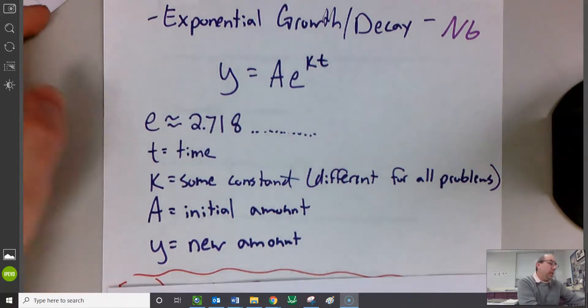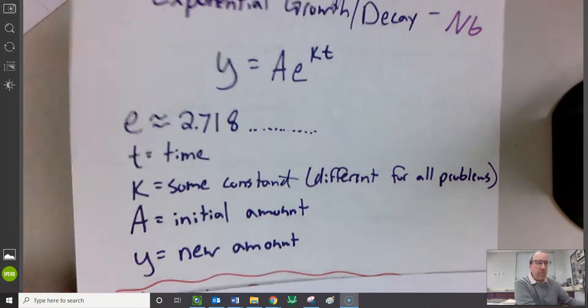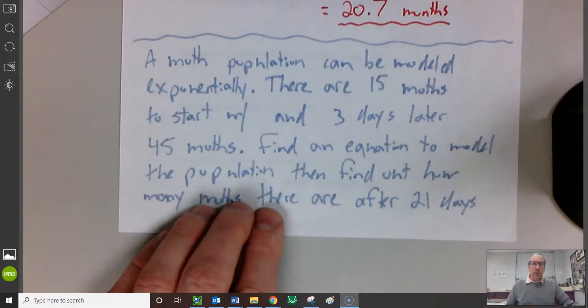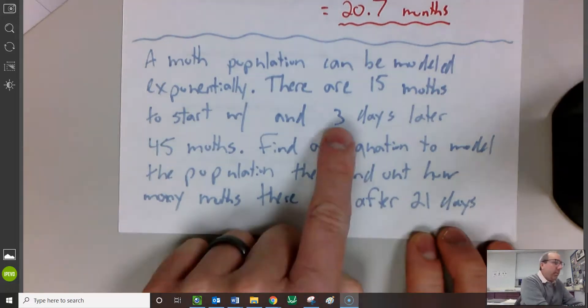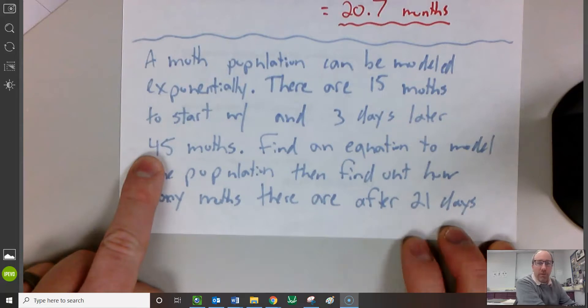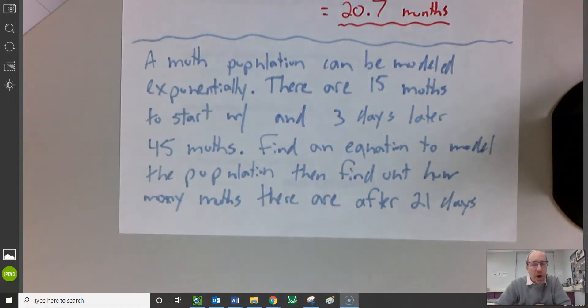Let's try a couple with these. I think I will only do the easy one. We'll save the difficult one for a different video. Here's the problem. The moth population can be modeled exponentially. As soon as I know something's growing exponentially, I can use that model we just saw: y = Ae^(kt). There are 15 moths to start with. I just told you the A value. And three days later, there are 45 moths. I just gave you a point on this graph. I'm giving you a data point. If you plug a 3 into my formula, it will kick out 45. So finally it says, find an equation that would model this population and then figure out how many moths there are after 21 days.